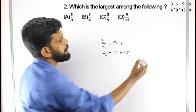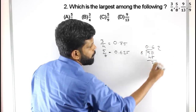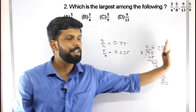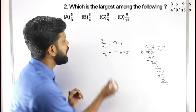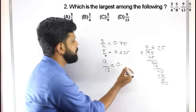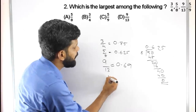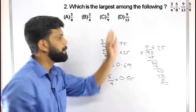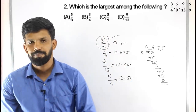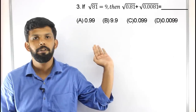Continuing the decimal comparison: 9/13 ≈ 0.69, and 5/9 ≈ 0.55. Comparing all decimal values, 3/4 = 0.75 is the largest. So our answer is 3/4, Option A is our right answer.